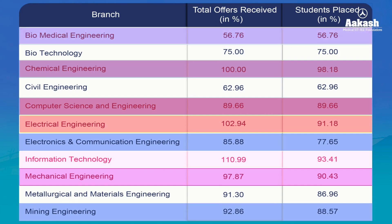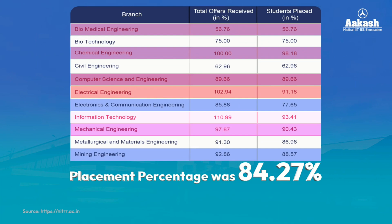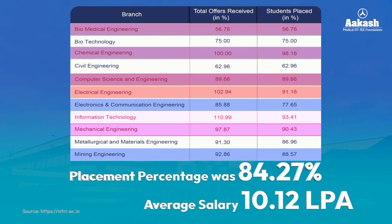On the other hand, the least placements were recorded from the Biomedical Technology branch at 56.76%.